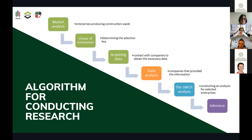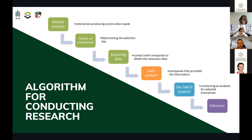Here you can see an algorithm for conducting our research. An algorithm was developed which includes a market analysis for companies producing construction waste in Poland. The next step was to select the companies for future analysis and choose key criteria for first selection. The next step was to contact the companies and try to obtain data on the amount of raw material they have, its origin, composition, and price. Based on the obtained data, it was necessary to make a numerical analysis, then a SWOT analysis, and finally to select the best companies for cooperation.